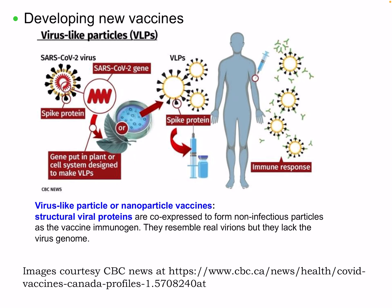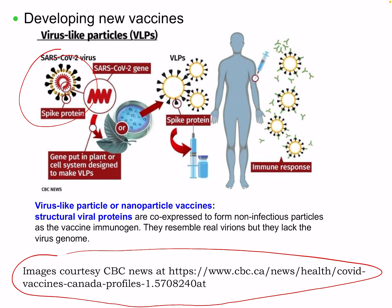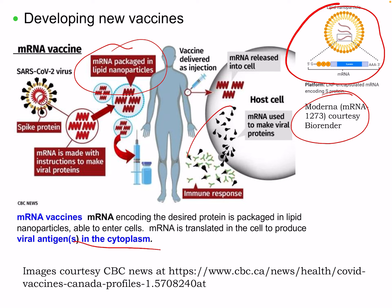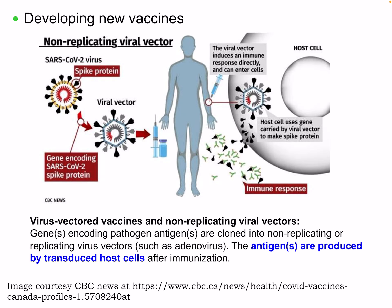For the mRNA vaccine — such as Moderna — the mRNA encoding the desired protein is packaged into lipid nanoparticles, which enter cells, and the mRNA is translated in the cell to produce viral antigens in the cytoplasm. Essentially, we're going in and having our own cells replicate the antigen, which is then targeted by the immune system — but it is not dangerous. For a non-replicating viral vector, genes encoding pathogen antigens are cloned into non-replicating or replicating virus vectors, and the antigens are produced by transduced host cells after immunization.